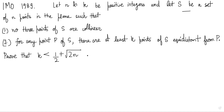They are asking us to establish a condition on k and n, where S is a set of points in the plane with no three collinear — so basically randomly distributed points where no three are on a straight line. For any point p of S there are at least k points equidistant from p, which means p can be the center of a circle and those k points lie on its circumference. So the question guides us toward a circle interpretation where every point of S acts as a circle center.